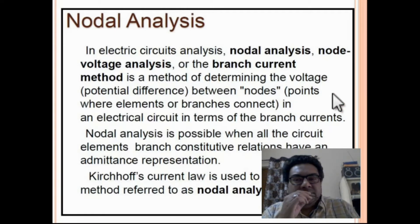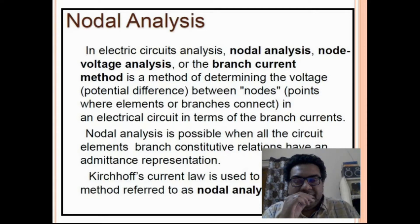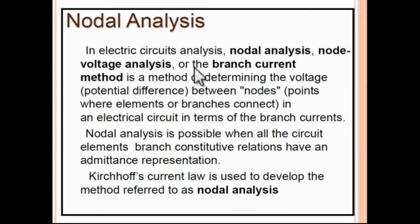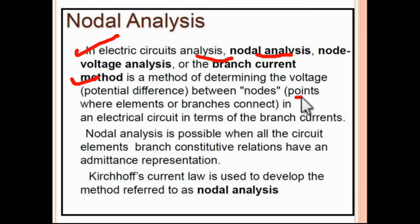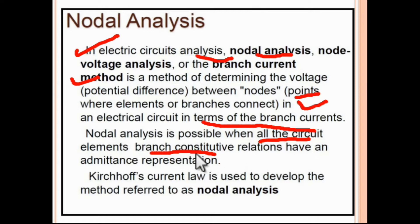In nodal analysis, the branch current method determines the voltage potential difference between nodes — the points where elements or branches connect in an electrical circuit — in terms of the branch currents. Nodal analysis is possible when all circuit elements' constitutive relations have an admittance representation, and Kirchhoff's current law is used to develop the method.